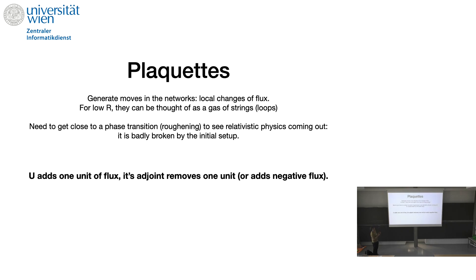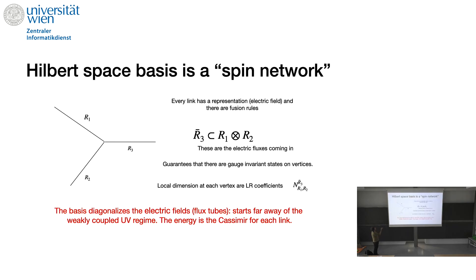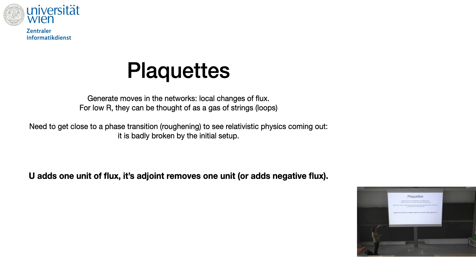In lower dimensions, these can be thought of as a gas of strings or loops because you're going to have very few boxes, and when you do the contractions the matrix indices contract just like traces. You need to get close to a phase transition — called the roughening phase transition in this gauge theory — to see relativistic physics like a real dynamical QCD string. This is badly broken by the strong coupling. You have to think of the matrix U as adding one unit of flux and its adjoint removes one unit, and the wave functions are polynomials in U.